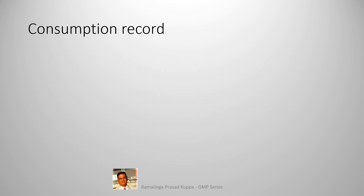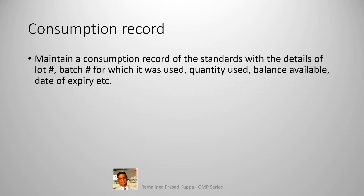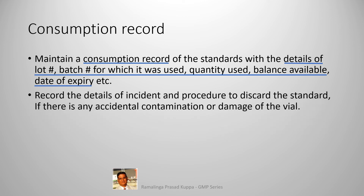Maintain a consumption record of the standard with the details of lot number, batch number for which it was used, quantity used, balance available, date of expiry, etc. This is to establish the usage of standards appropriately — it serves as a balance sheet of reference standard usage. Record the details of any incident and the procedure to discard the standard if there is any accidental contamination or damage of the vial, to establish that only uncontaminated standard is in use.